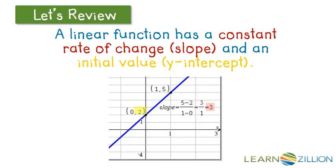On a graph, the initial value is the one where the graph crosses the y-axis, and then again showing the slope, the calculation for the slope is the change in y divided by the change in x. So 5 minus 2 and 1 minus 0, 3 divided by 1 is 3.